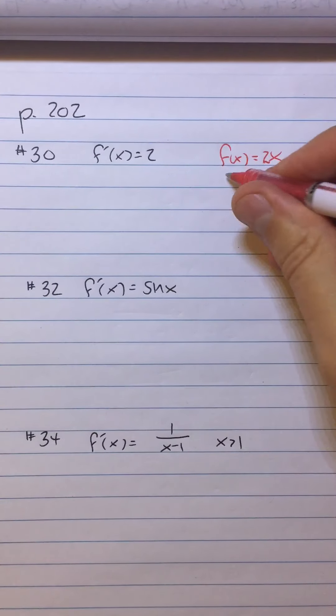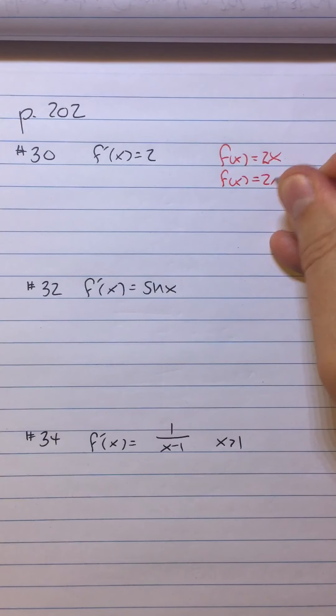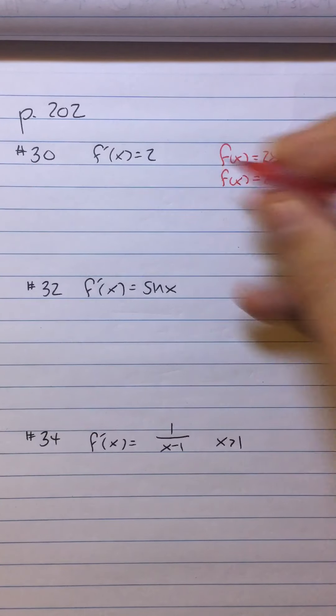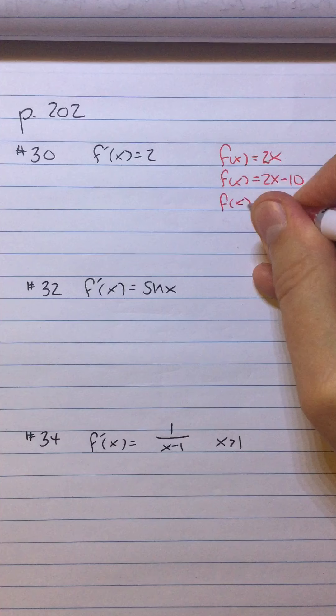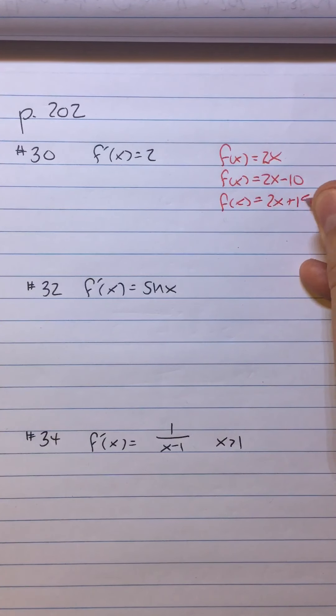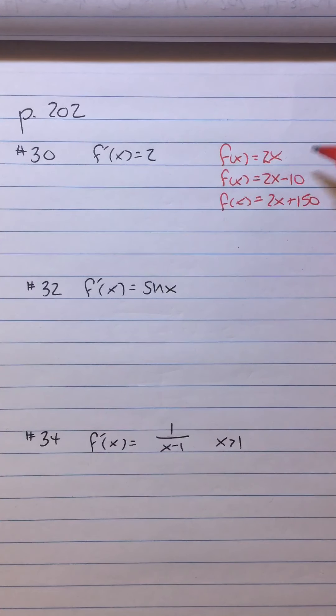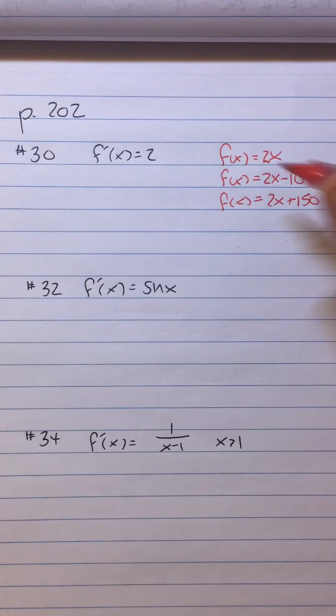But also, f of x could be 2x minus 10. Derivative of that would be 2 as well. f of x could be 2x plus 150. So how many possible functions have this derivative?